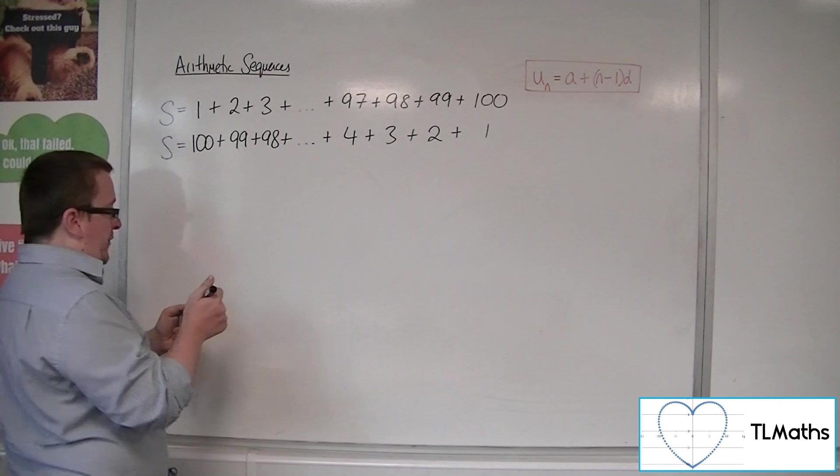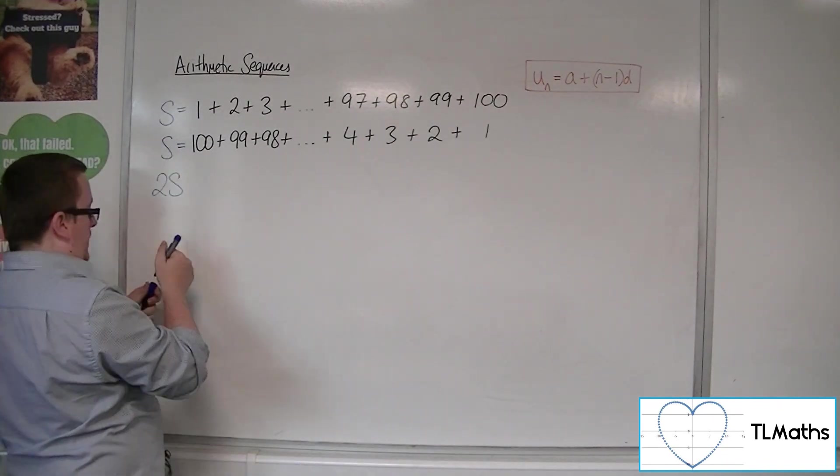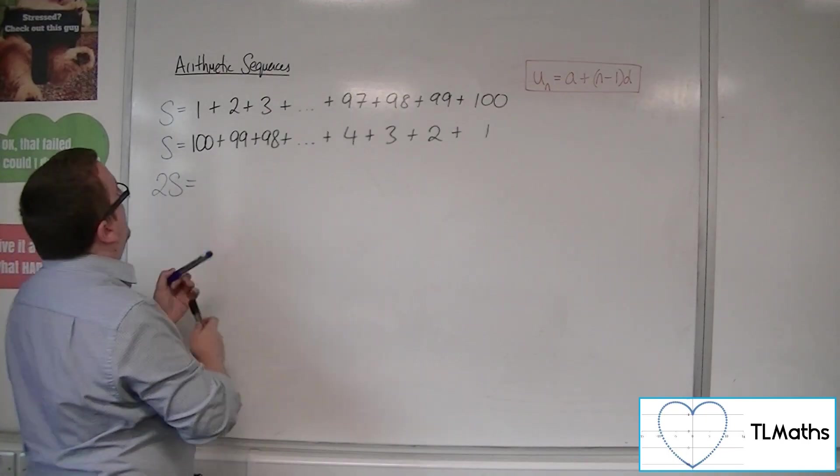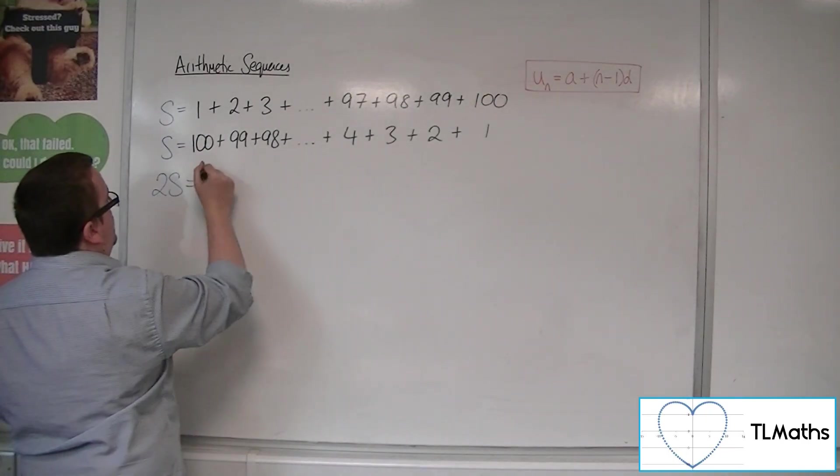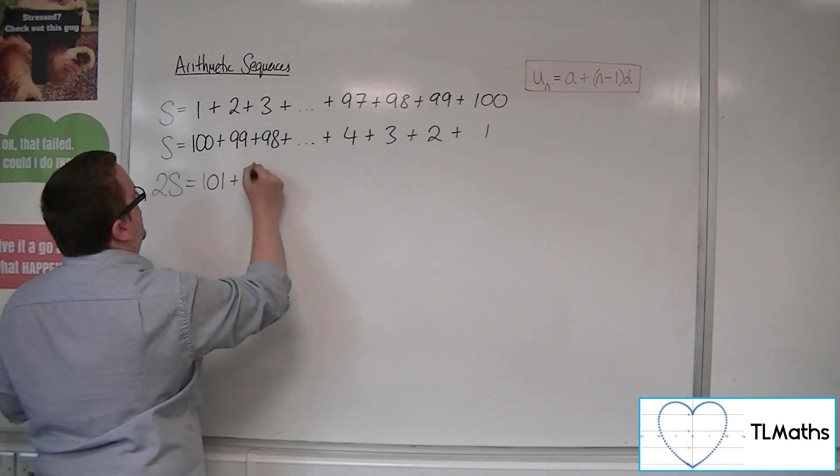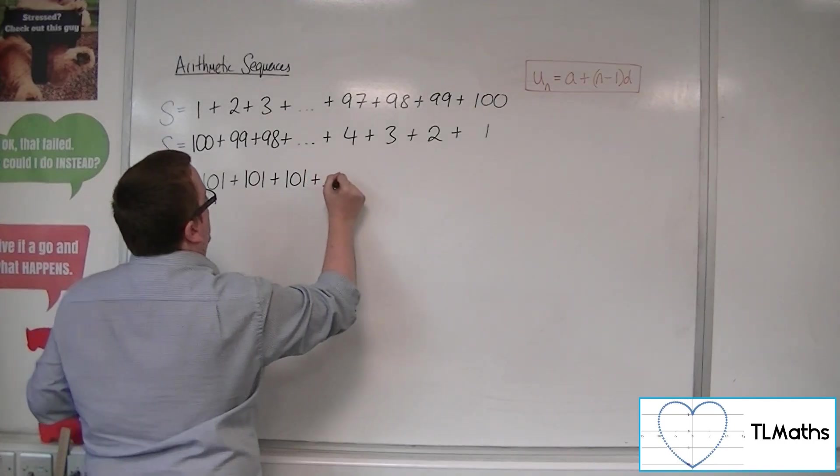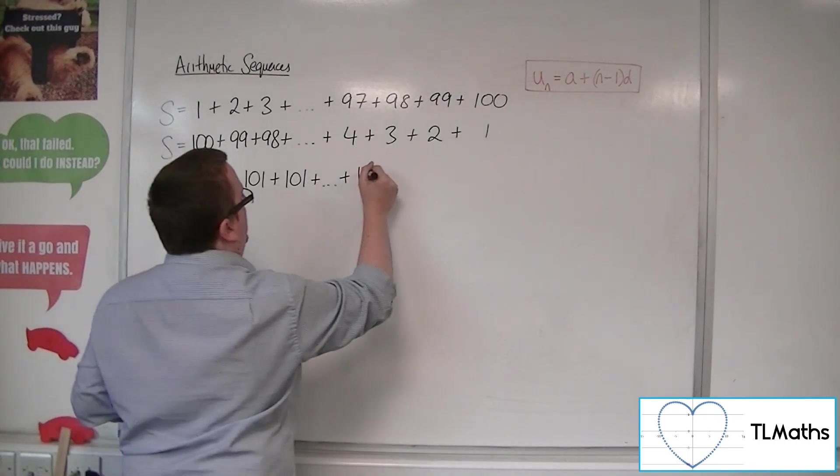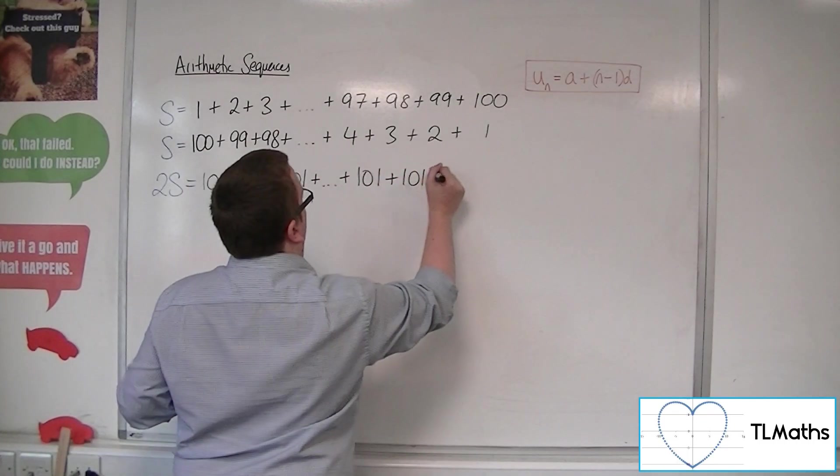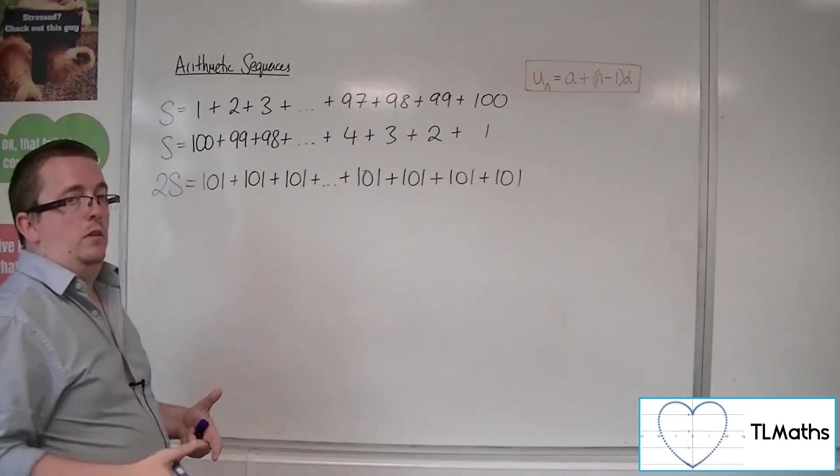Now, if I added those two sequences together, then what we're going to get is 1 + 100, which is 101. 2 + 99 is 101, 3 + 98 is 101, plus lots of 101's as we go. So they're all 101.